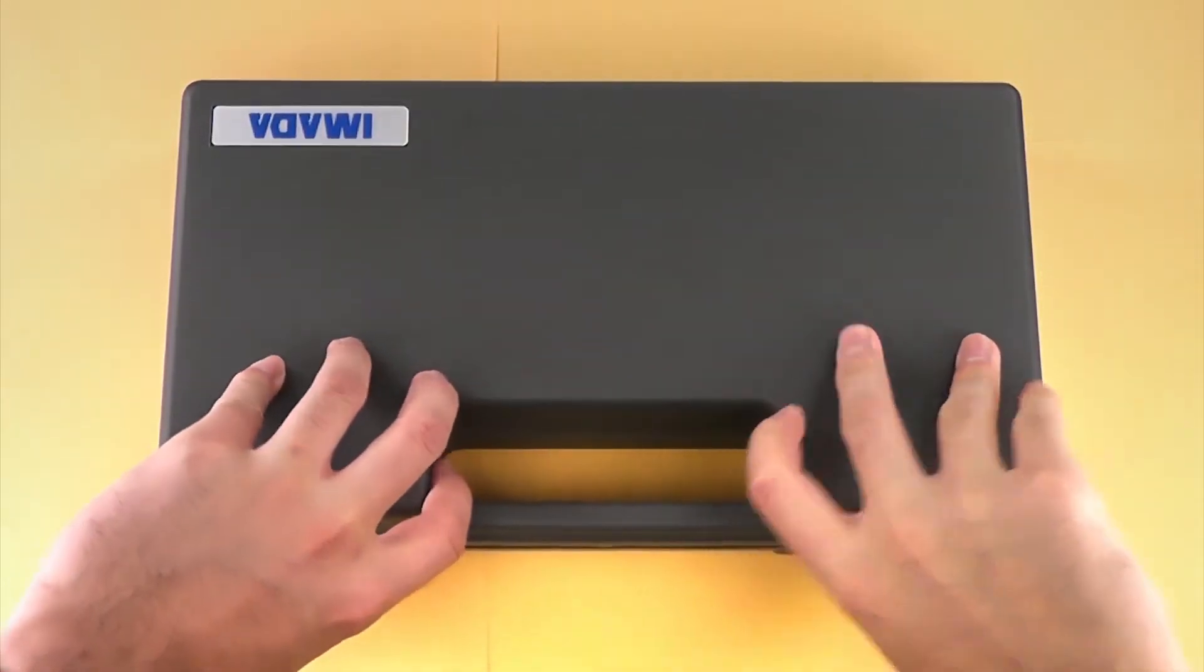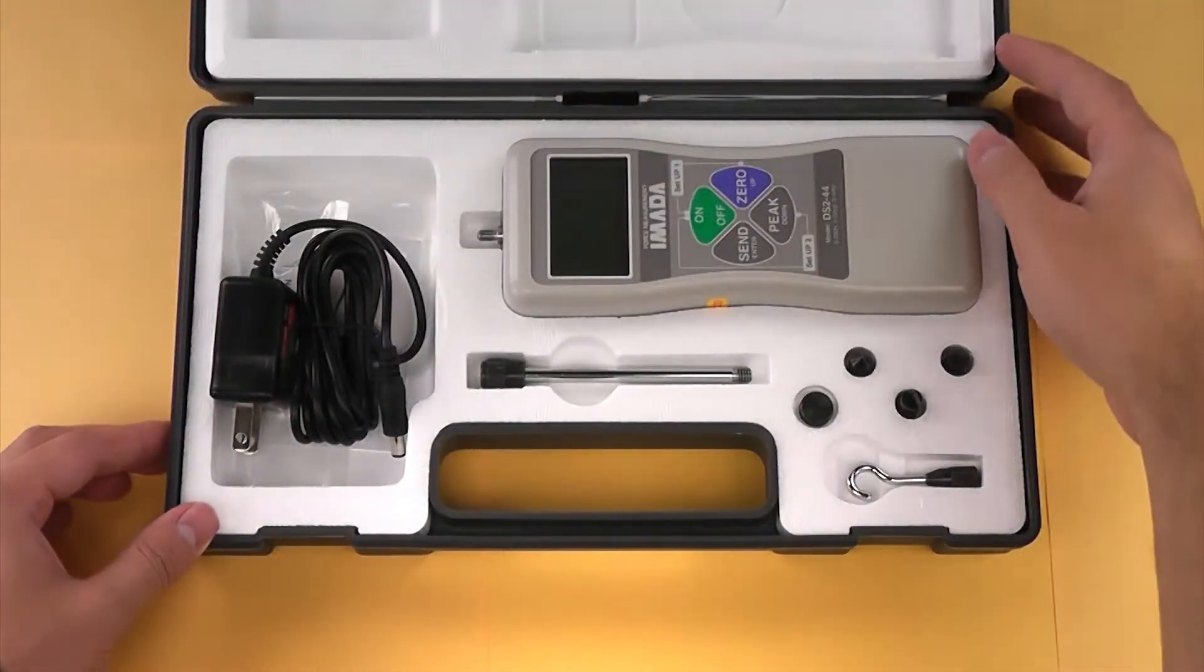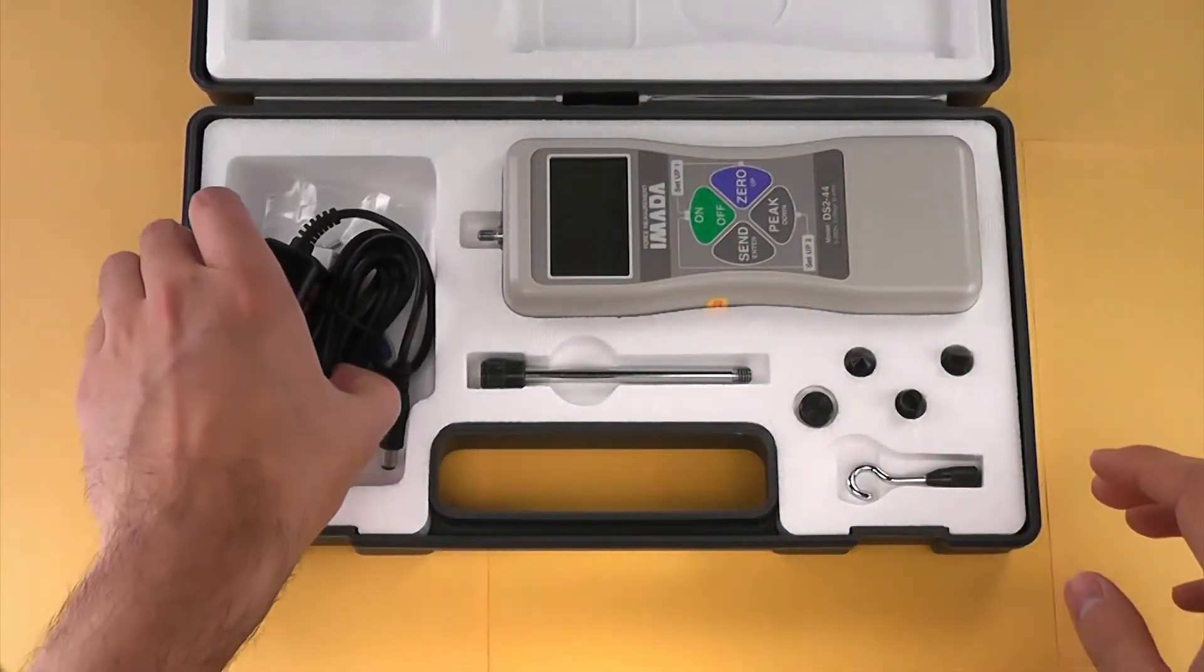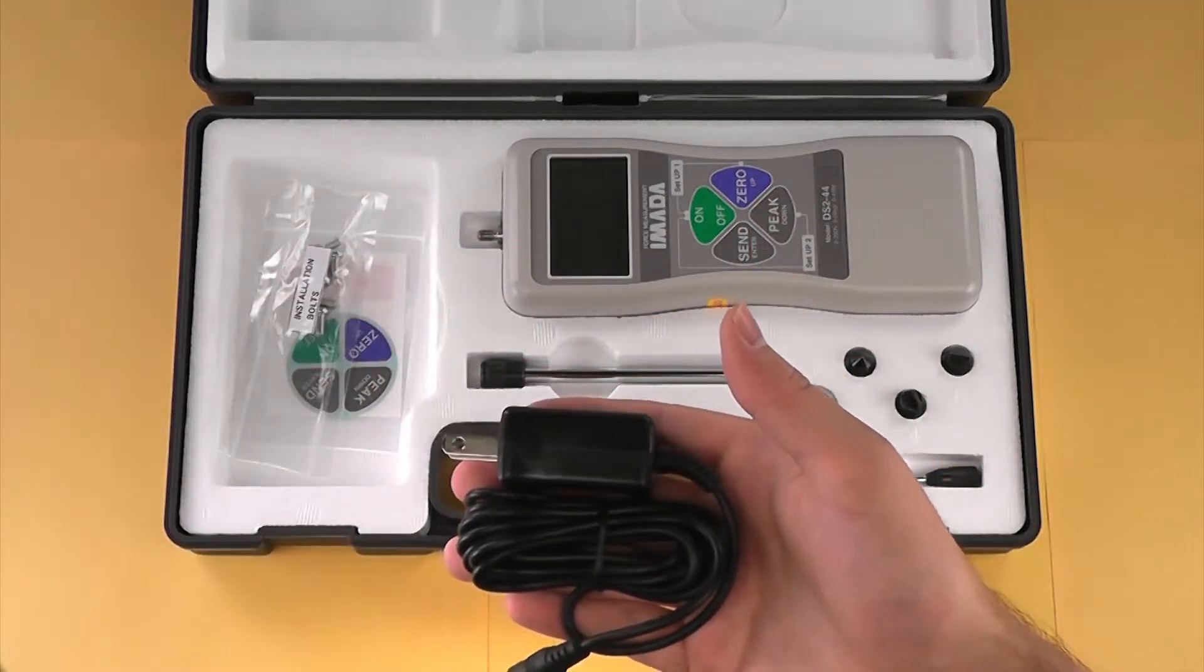The DS2 force gauge kit includes a number of accessories and attachments. This is the AC adapter and charger for the gauge.